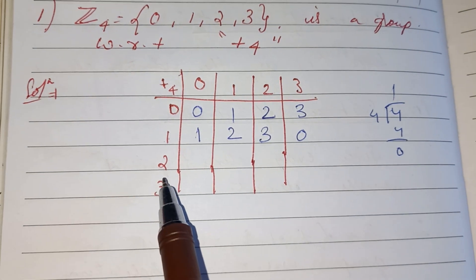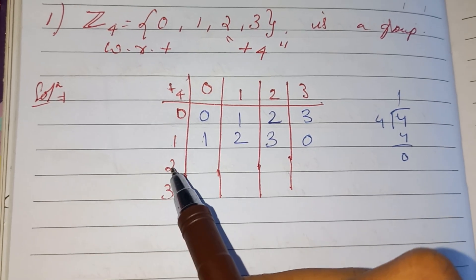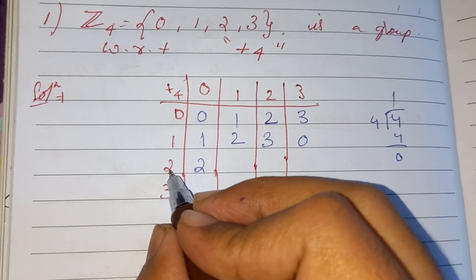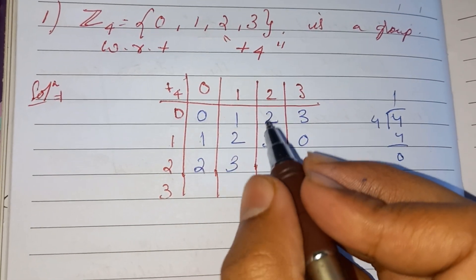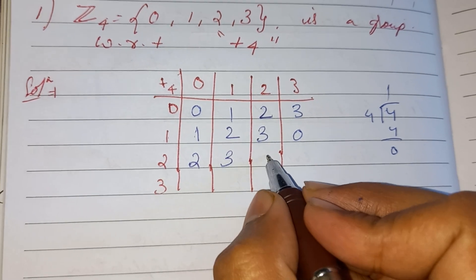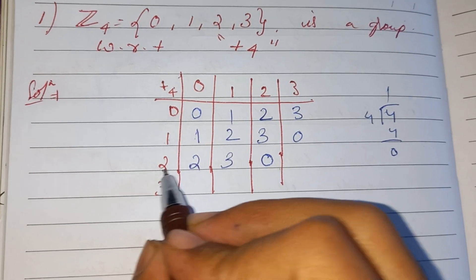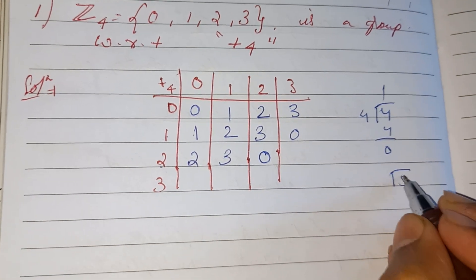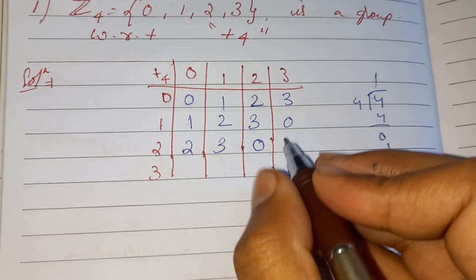Then 2 plus 0 is 2, 2 plus 1 is 3. For 2 plus 2 equals 4, the remainder when divided by 4 is 0. Then 2 plus 3 equals 5, and if we divide 5 by 4 the remainder is 1.